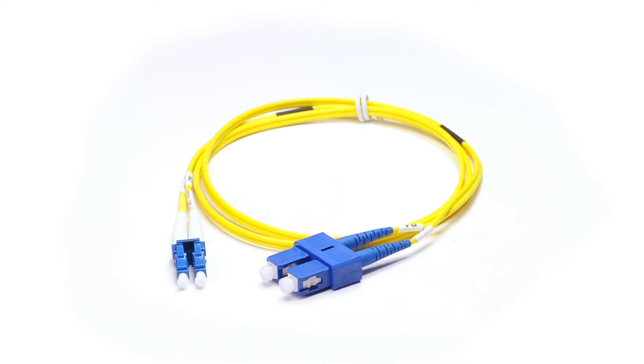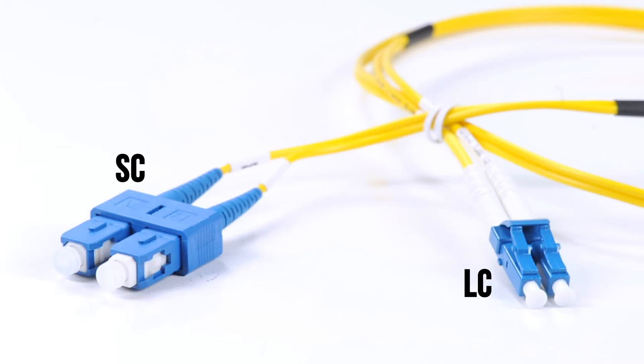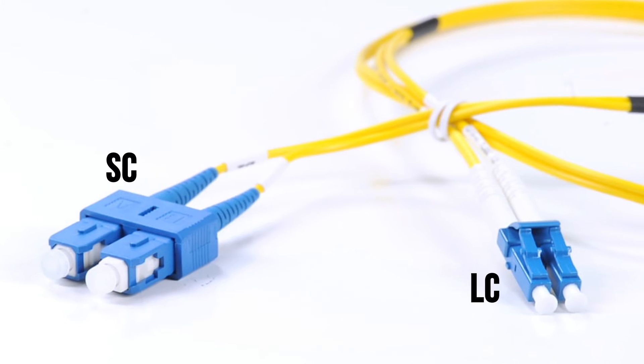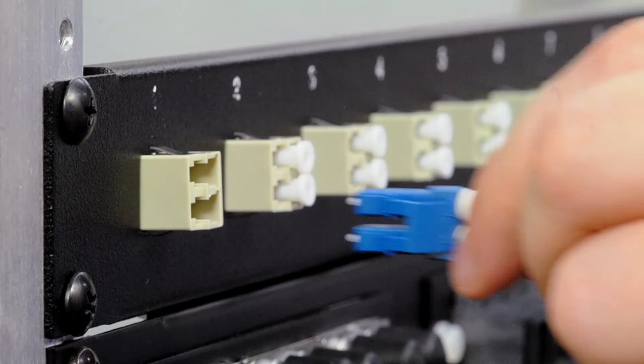This is an LC to SC single-mode duplex fiber cable. It features two LC connectors on one end and two SC connectors on the other end. An LC connector has a small form factor design with a molded plug casing that has a push and pull locking system.